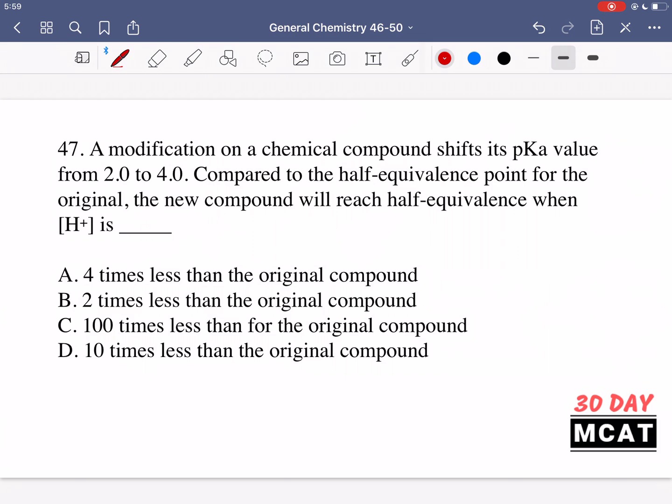In question 47 it says a modification on a chemical compound shifts its pKa value from 2.0 to 4.0. Compared to the half equivalence point for the original, the new compound will reach half equivalence when the concentration of protons is blank. So we had a modification, our pKa changed from 2 to 4, and we're comparing the half equivalence point between the original and the new.